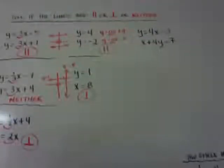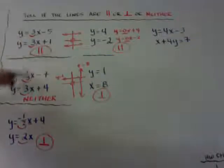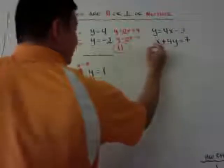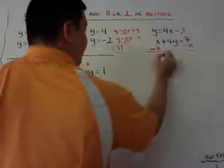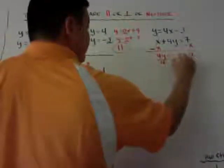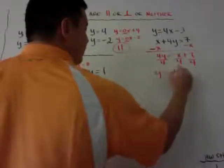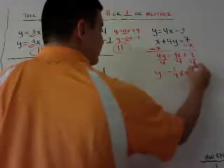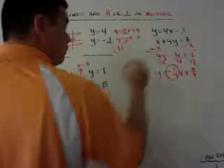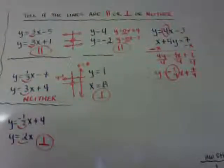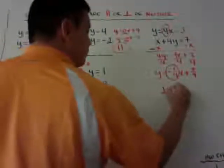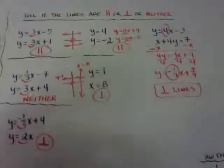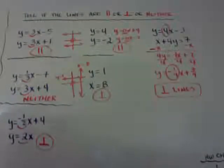The last example: the top equation is in slope-intercept form with slope 4 — easy. The bottom one is not, so I subtract x from both sides to get 4y equals negative x plus 7. I divide by 4 to get y equals negative 1 fourth x plus 7 fourths. When I compare slope 4 to slope negative 1 fourth, I can see they are opposite reciprocals. Therefore these lines are perpendicular. That's how you tell if lines are parallel, perpendicular, or neither.